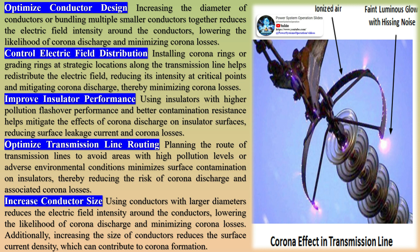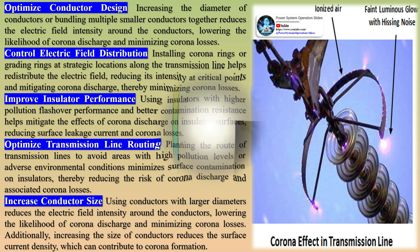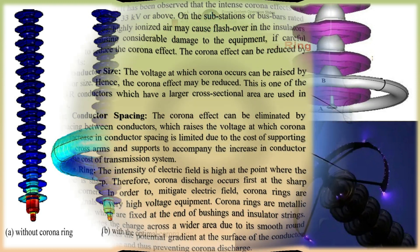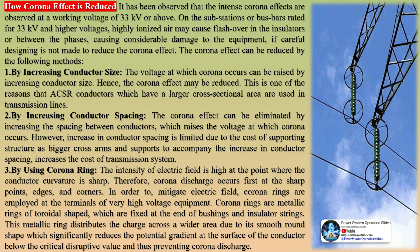Methods for reducing corona losses: corona loss can be reduced by using conductors with large diameters, as increasing the size of the conductor raises the voltage at which corona occurs. Hollow conductors are used to increase the effective diameter of the conductor without using additional material; since corona loss is inversely proportional to the diameter of the conductor, corona loss decreases with an increase in diameter. Bundled conductors, made up of two or more sub-conductors used as a single-phase conductor, and optimized conductor design also help. Installing corona rings or grading rings at strategic locations along the transmission line helps redistribute the electric field, reducing its intensity at critical points and mitigating corona discharge, thereby minimizing corona losses.